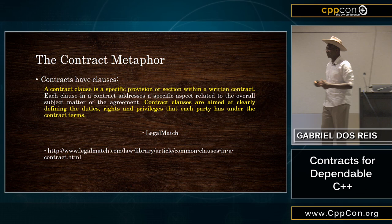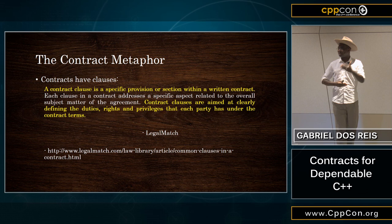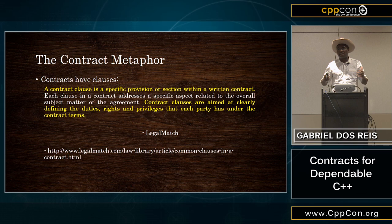A contract clause is aimed at clearly defining the duties, rights, and privileges of each party that has the agreement on the contract. The contract is something between at least two parties, where you have expectations, but you also have duties, and it clearly specifies what goes on. In the context of programming languages, we have several kinds of contracts.